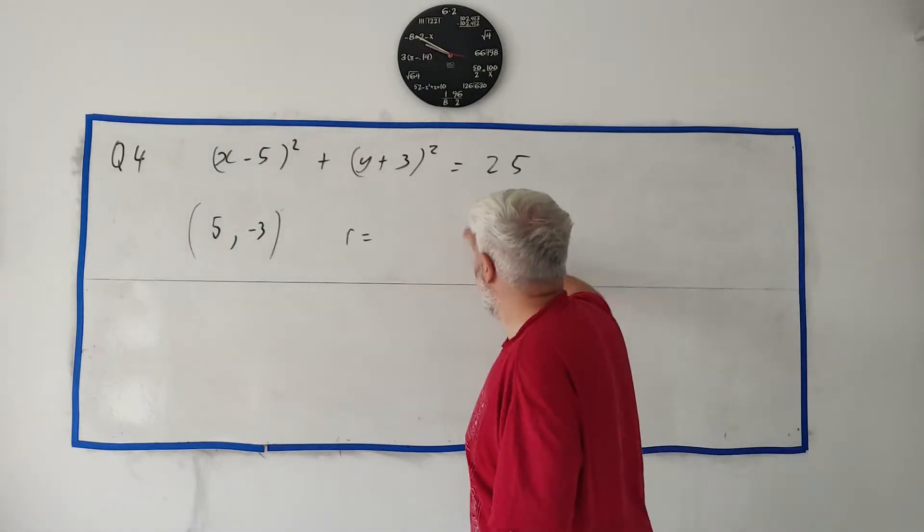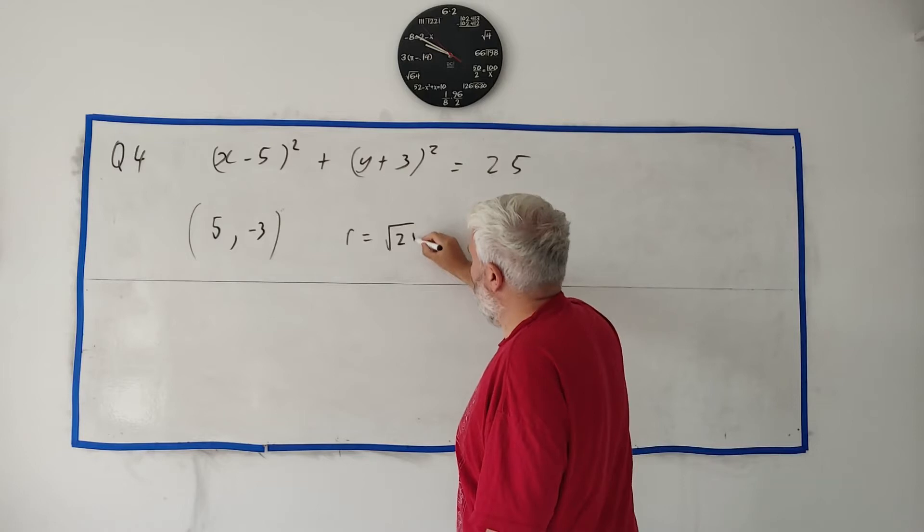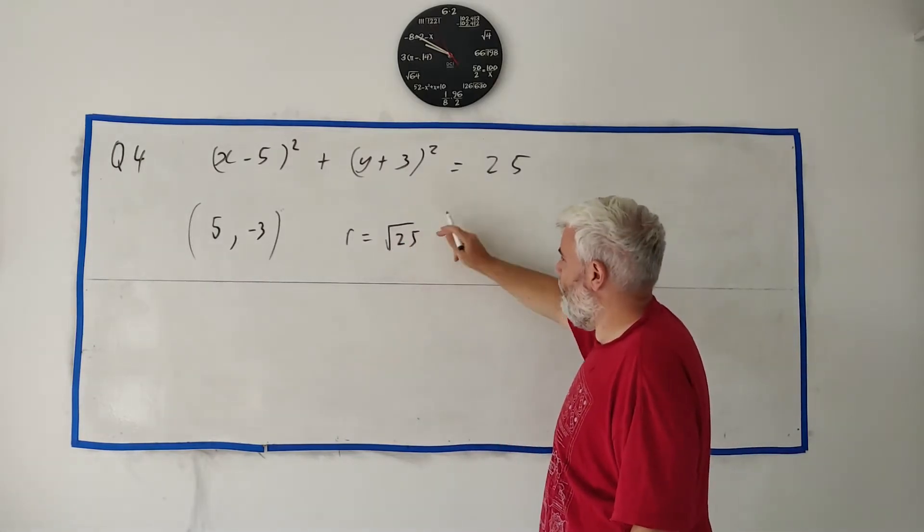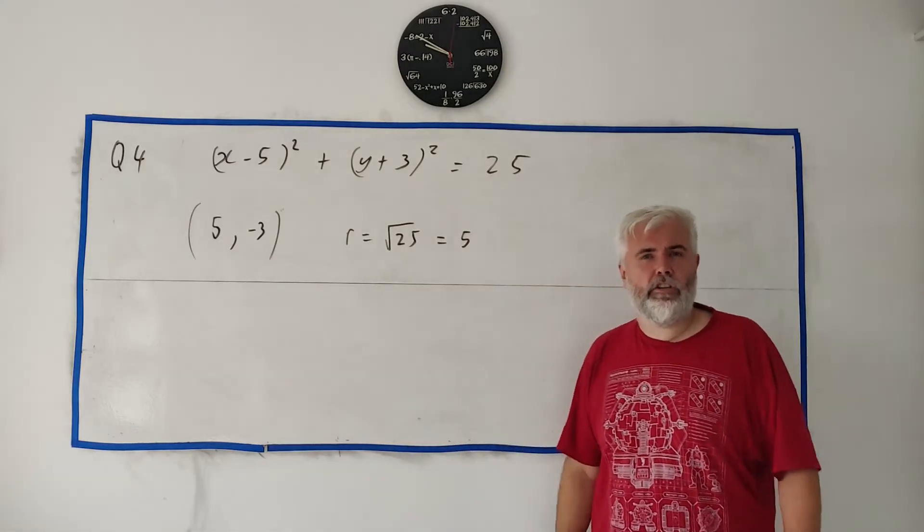And the radius, the radius is just equal to the square root of this number. So square root of 25. Sometimes you can just leave that but if it goes in nicely like this one does, the square root of 25 is 5. And that's your two answers there.